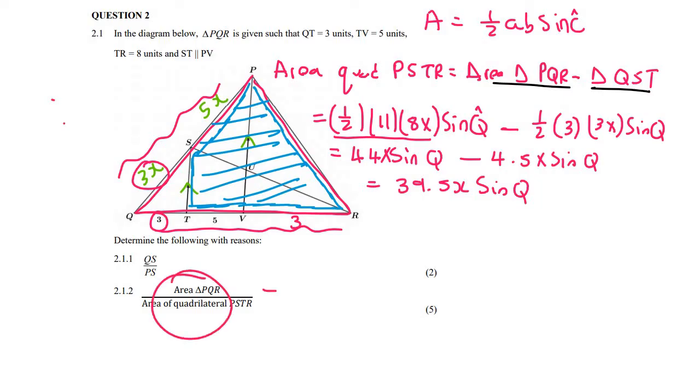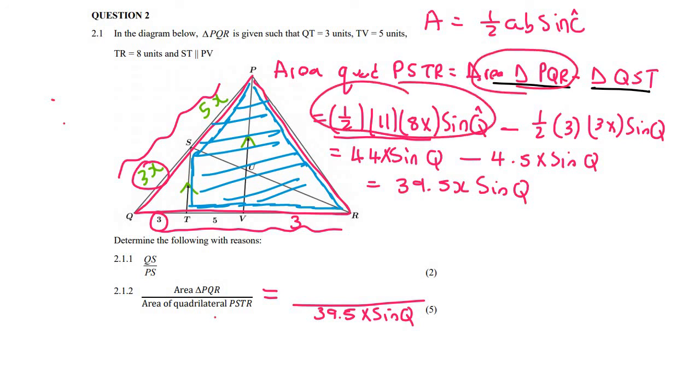So now we can actually go fill this in over here as what we know that the area of the quadrilateral is 39.5X sin Q. And then the area of the triangle PQR, we already looked at that over here. So that means it's 44X sin Q. And then all of a sudden, the sin Qs cancel, the Xs even cancel. And so we're left with 44 divided by 39.5. And then on the calculator, you're going to get 88 over 79. And to two decimal places, that'll be 1.11. So that's quite a difficult one.